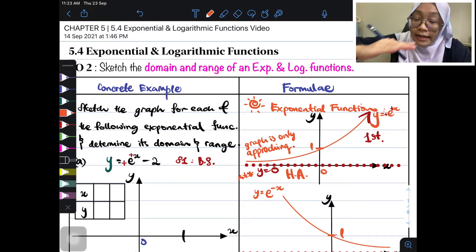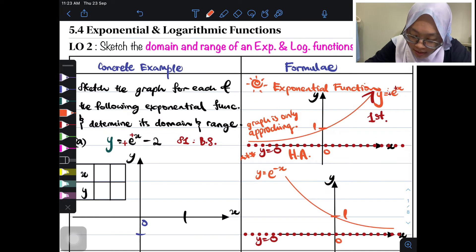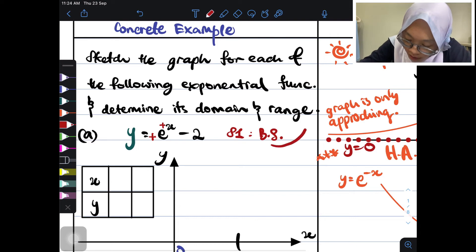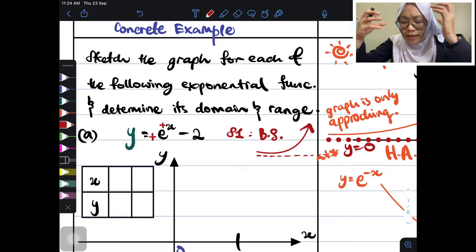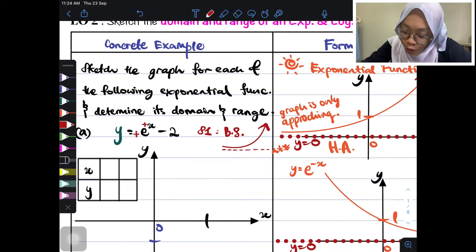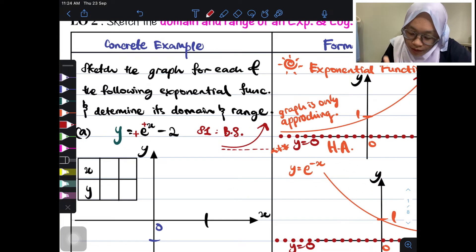This asymptote is what we call as horizontal asymptote. So now, basic shape we already know - it goes towards the first quadrant. And then it has a dotted line. You can make the basic shape first so you can imagine it. So now, for this one, the asymptote is zero.